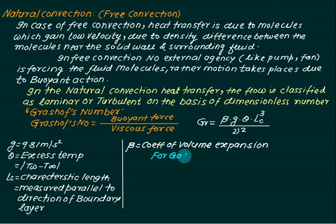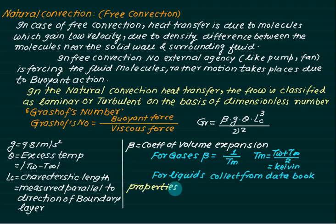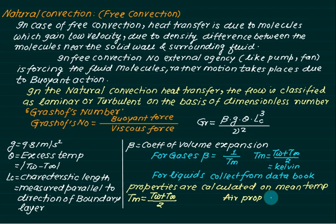For gases, β = 1/Tm where Tm must be in Kelvin. The mean temperature is Tm = (Tw + T∞)/2 — remember it must be in Kelvin. For liquids, β must be obtained from property tables. Properties of the fluid are considered at the mean temperature. Air properties are typically on page 34 and water properties on page 22 — please check your specific tables.